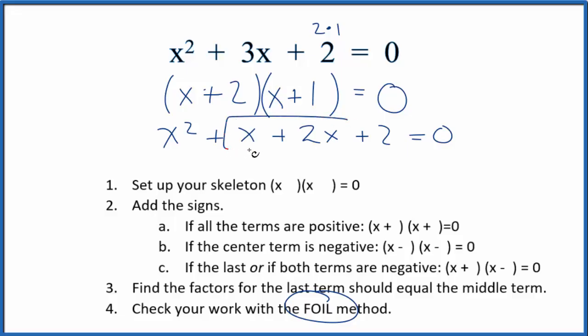So if we look at this middle bit here, x plus 2x, that's 3x. So x squared plus 3x plus 2 equals 0. Same thing we have up here.